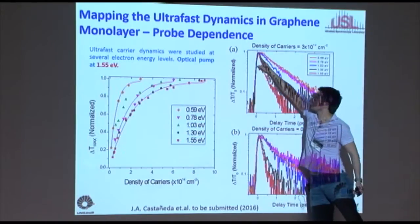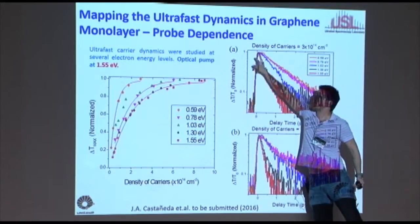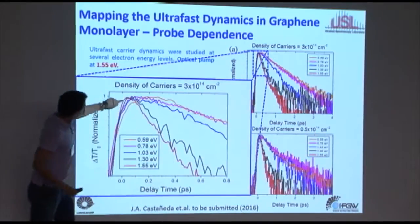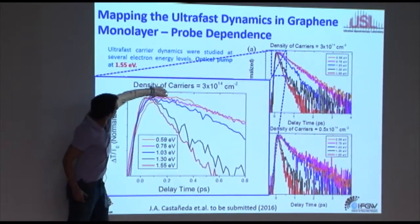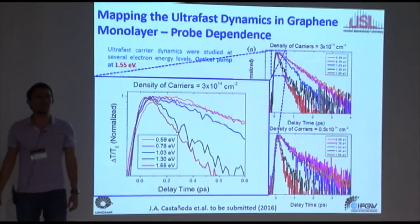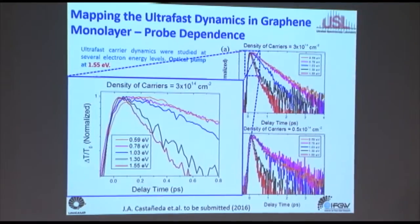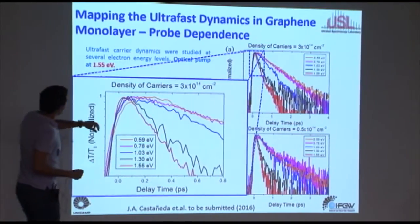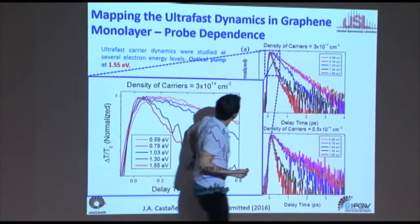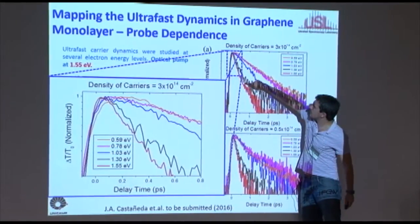Look at this: probing at 800 nm and 1.3 eV is pretty sharp. I can zoom in so you see better — it starts getting broader and broader. After about 500 femtoseconds, it's still flat up there. If you look here, it's flat at 500 femtoseconds, then you go up at 500 femtoseconds. We killed the fast component here — that's basically where the fast component goes.